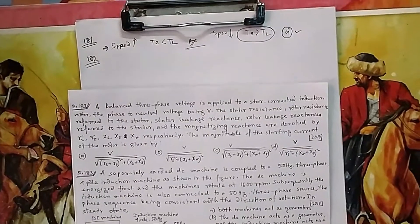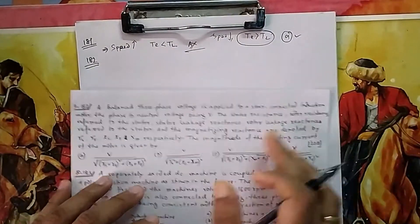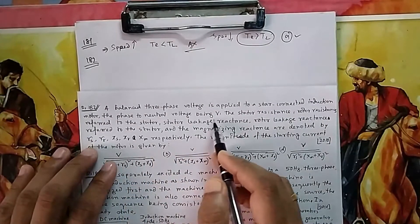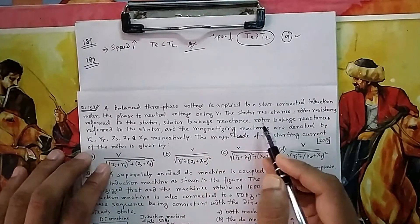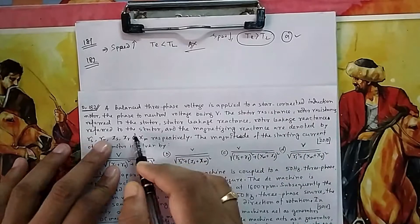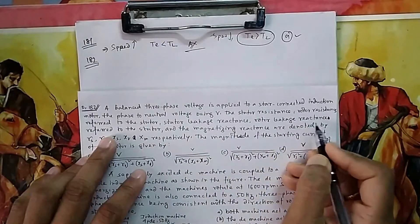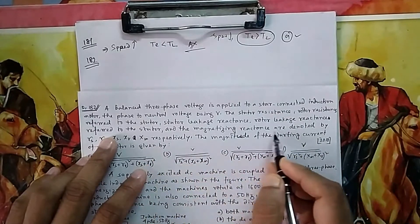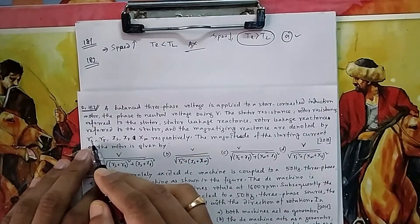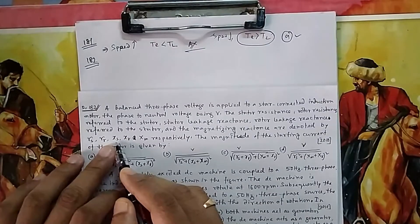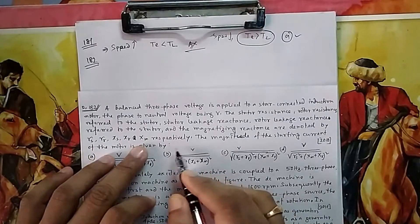Question 182: A balanced three-phase voltage is applied to a star-connected induction motor, the phase-to-neutral voltage being V. The stator resistance, rotor resistance referred to stator, stator leakage reactance, rotor leakage reactance referred to stator, and magnetizing reactance are denoted by RS, RR, XS, XR, and XM. Find the magnitude of the starting current.